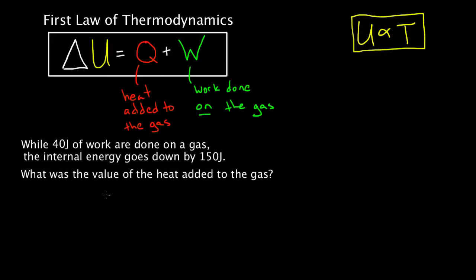Let's look at one more. 40 joules of work are done on a gas and the internal energy goes down by 150 joules. What was the value of the heat added to the gas? This time we're not solving for the internal energy — we're solving for Q. We know the work done on the gas is positive 40 joules, and the internal energy went down by 150 joules so delta U is negative 150. We plug in: negative 150 equals Q plus positive 40.